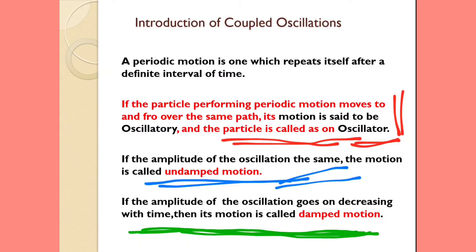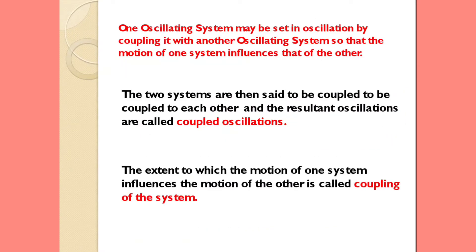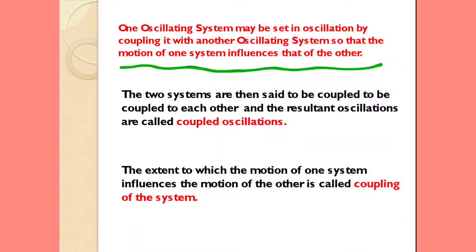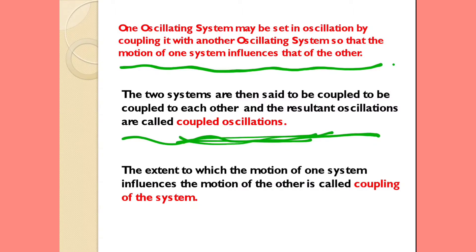Key terms so far: undamped motion and damped motion. One oscillatory motion may be set in oscillation by coupling it with another oscillatory motion so that the motion of one system influences that of the other. The two systems are then said to be coupled to each other and the resultant oscillations are called coupled oscillations.